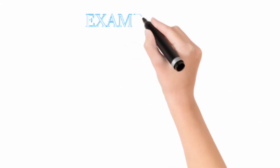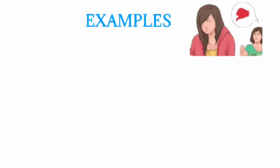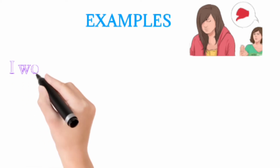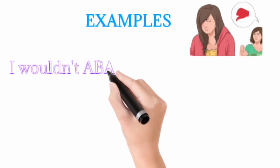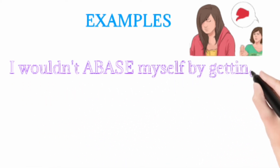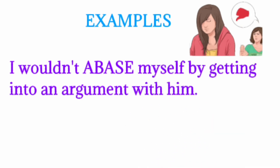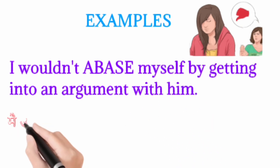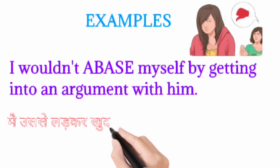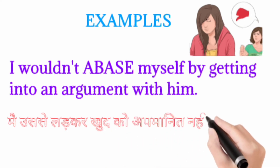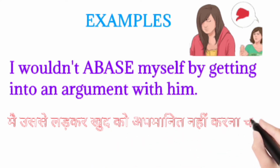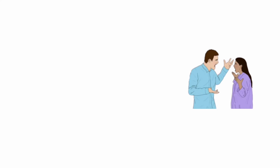I'm here with three examples. The first one is: 'I would not abase myself by getting into an argument with him.' In Hindi, iska matlab hai: main usse ladkar khud ko apmanit nahin karna chahti.